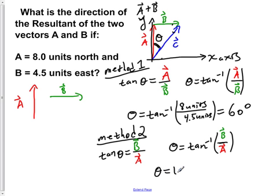And if we now plug in values, theta is equal to the tan inverse of 4.5 units over 8 units, which would give us a value of roughly 30 degrees. Now knowing this angle of 30 degrees here.